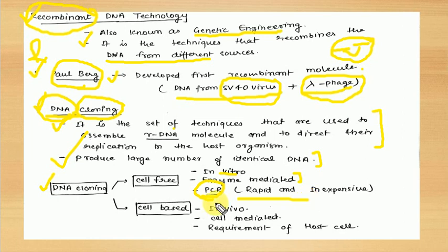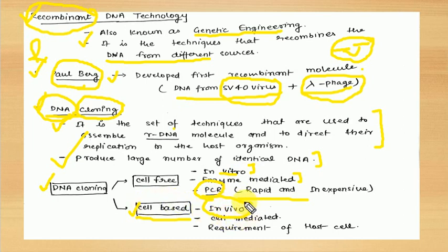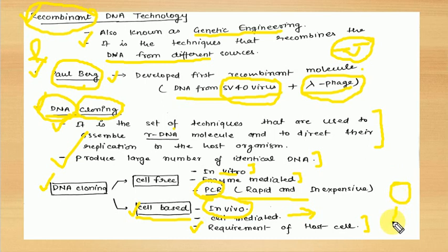The second method of DNA cloning is cell-based cloning. It is the opposite of cell-free cloning. In cell-free cloning, the process was in vitro — outside the cell. In cell-based cloning, it is an in vivo method. It is cell-mediated; no artificial or external enzymes are required. It requires the host cell. If you have prepared a recombinant vector, a host cell is necessary for it.